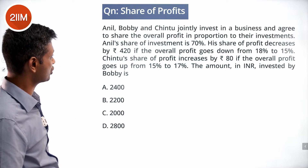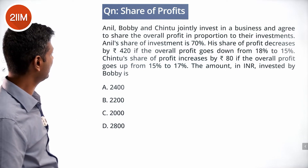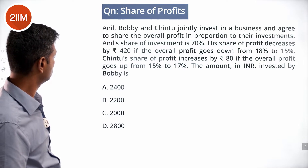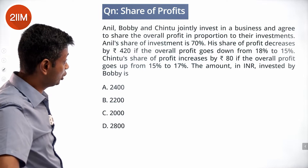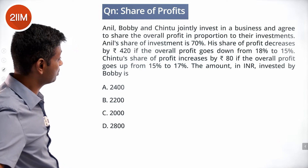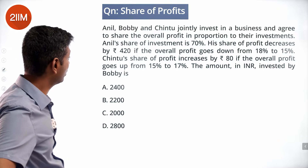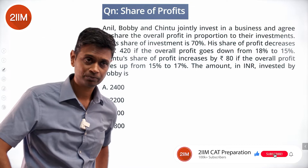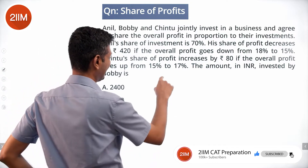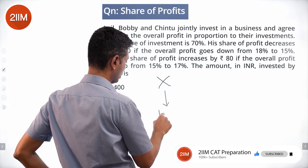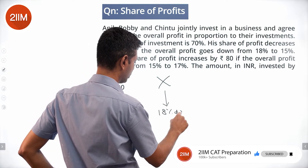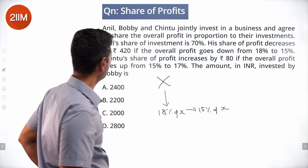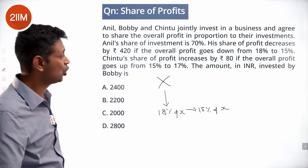Anil, Bobby, and Chintu jointly invest in a business and agree to share the overall profit in proportion to their investments. Anil's share of investment is 70%. The share of profit decreases by ₹420. The overall profit goes down from 18% to 15%. On some amount x they have invested, instead of getting 18% of x, it goes to 15% of x, and Anil's share falls by ₹420.